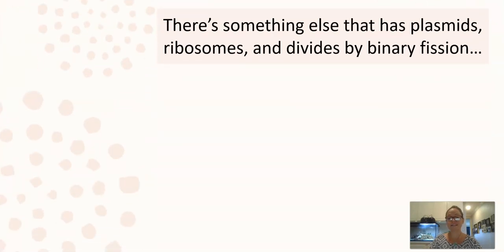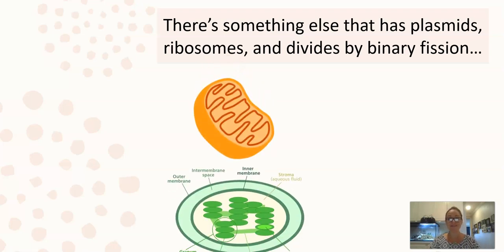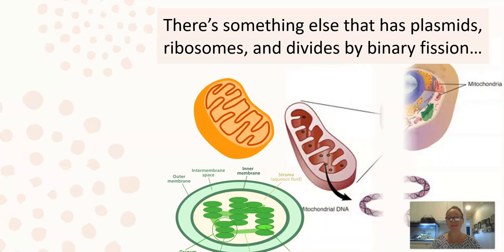Now when we look at two awesome organelles, our mitochondria and our chloroplasts also have their own plasmids, their own ribosomes, and they divide by binary fission.